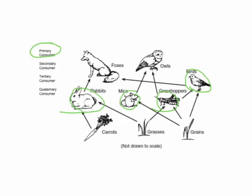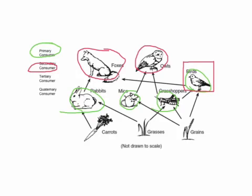Secondary consumers, reds here, are things that eat the primaries. So follow the arrow from the primaries. So yep, we got foxes, owl eats the mouse and the grasshopper. The bird eats the grasshopper too, so check it out. The bird is both a primary and a secondary consumer.